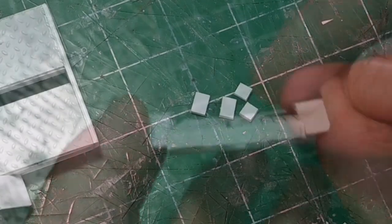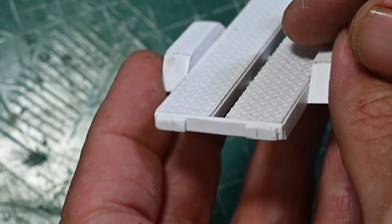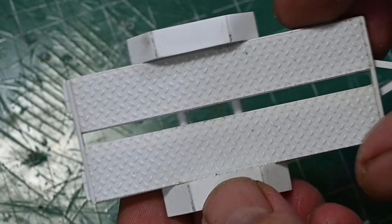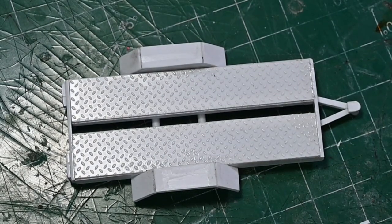And then one extra thing I didn't put on the last trailer is some tail lights. Just some little squares and rectangles of 1 millimeter styrene there.